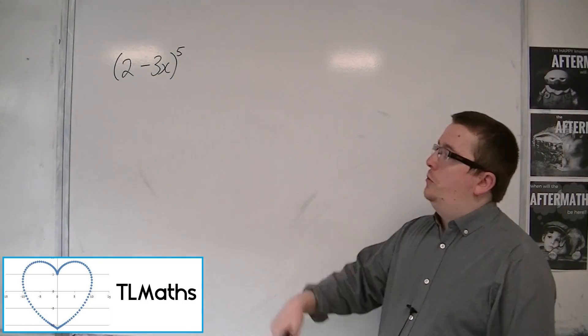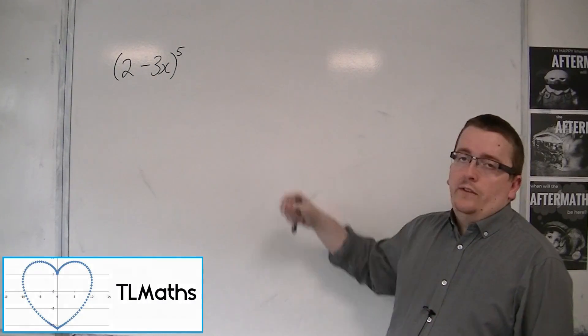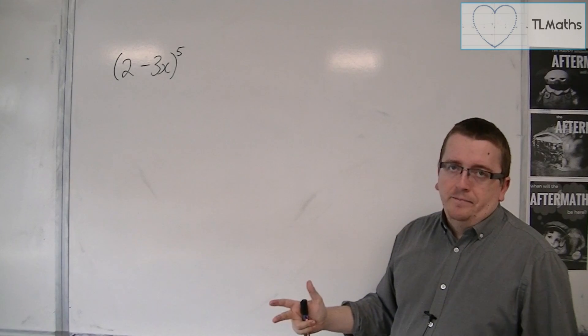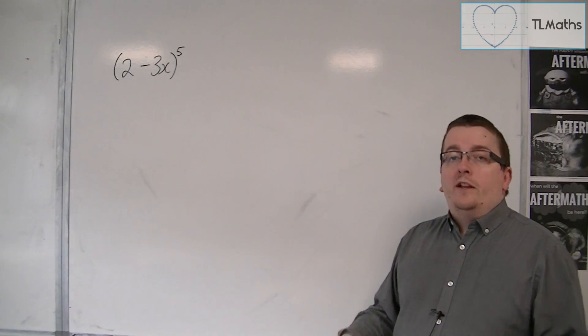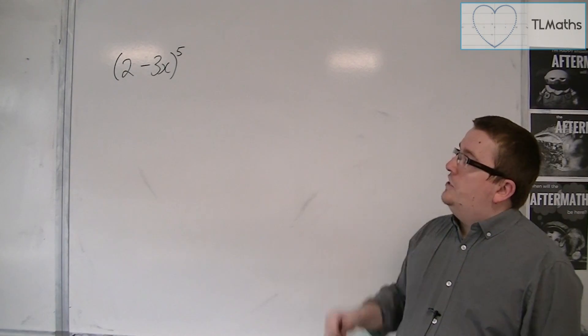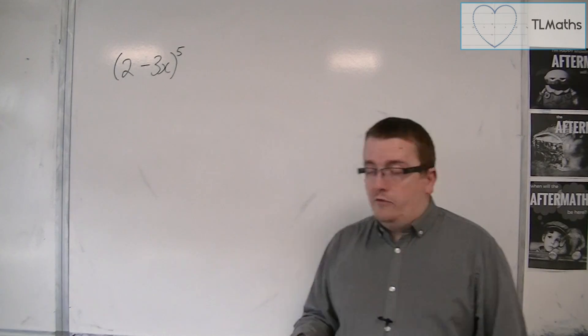In Core 2, we learnt a way of expanding brackets like these very quickly, and that is using binomial expansion. So if we had 2 minus 3x to the power of 5, for example...